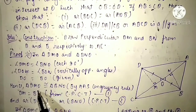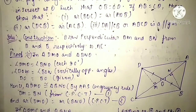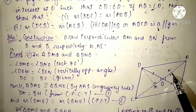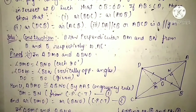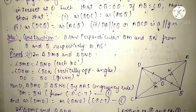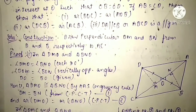By the AAS congruence rule, we can say that both triangles are congruent. So triangle DMO is congruent to triangle BNO. If these two triangles are congruent, their areas will also be equal. So we can write area of DMO equals area of BNO by CPCT. Name this as equation number 2.